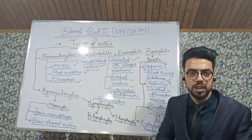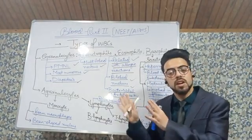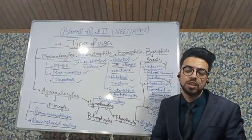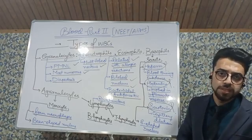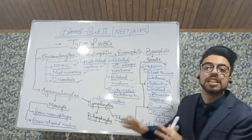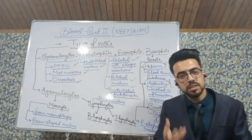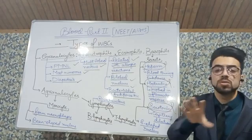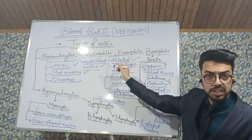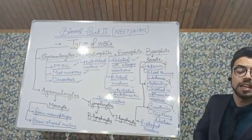Apart from forming macrophages, monocytes are called the main scavengers of the body — they are involved in removing dead substances, dead particles, and waste materials. Monocytes have a bean-shaped nucleus. To compare: neutrophil has a multi-lobed nucleus, eosinophil has a bilobed nucleus, basophil has an S-shaped nucleus, and monocyte has a bean-shaped nucleus.